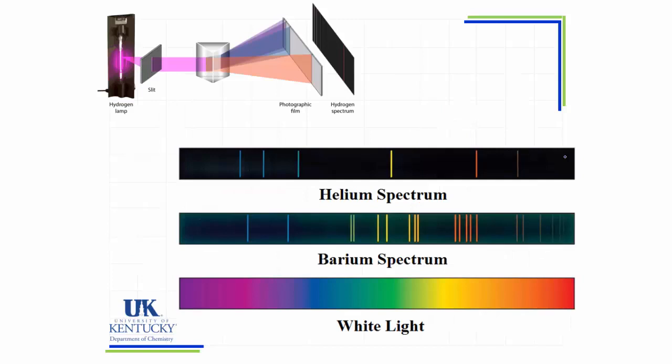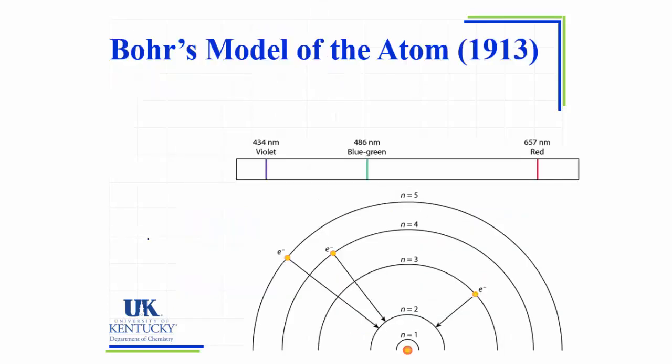Now here is a helium spectrum which is different than the hydrogen spectrum. It's got a few more lines. The barium spectrum has even more lines. Now if you passed white light through the prism, you'd see all the various colors of the rainbow that you see there at the bottom. So we're just producing light at very specific wavelengths.